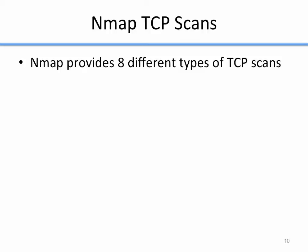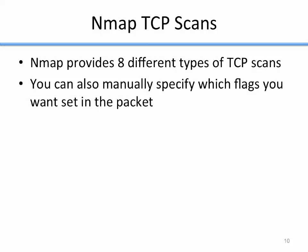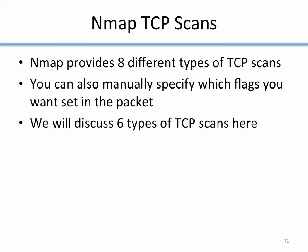Now let's look at the different types of TCP scans that NMAP can do. NMAP provides eight different types of TCP scans, and you can also manually specify which flags to set in a packet — all nine bits. Out of the eight, we're going to look at six of them.